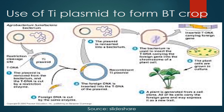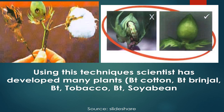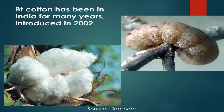This picture shows the Ti plasmid used to form BT crops using rDNA technology. Scientists have developed many plants this way, including BT cotton, BT brinjal, BT tobacco, and BT soybean. BT cotton has been used in India for many years — it was introduced in 2002 — and has since been used as a pest-resistant plant.